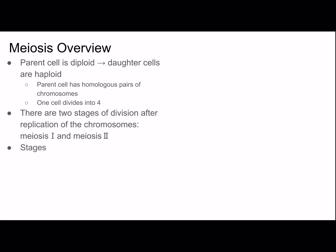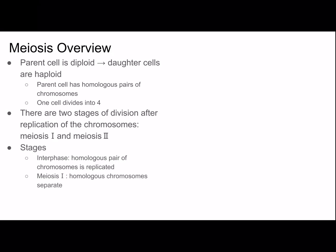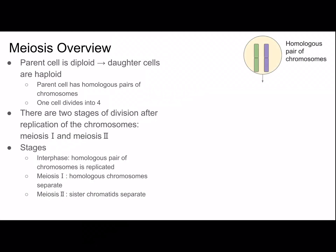Now let's look at an overview of the stages. In interphase, homologous pairs of chromosomes are replicated. Then in meiosis I, homologous chromosomes are separated. Then meiosis II — which reminds me a little bit of mitosis — is where sister chromatids are separated. I'm going to show a diagram giving an overview of meiosis; it doesn't talk about the details, but we'll cover them in the coming slides.